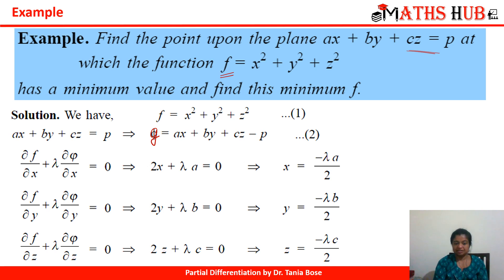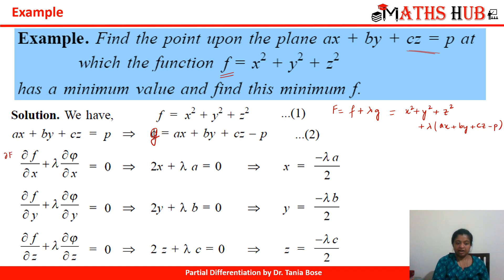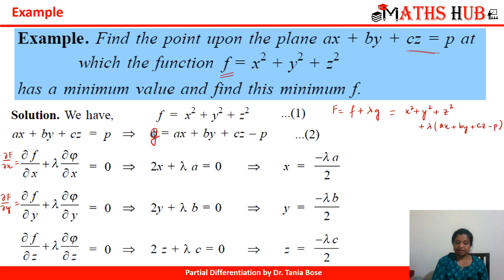Following the working rule, we construct F = f + λφ = x² + y² + z² + λ(ax + by + cz − p). Now we find ∂F/∂x = 2x + λa = 0, giving x = −λa/2. Then ∂F/∂y = 2y + λb = 0, giving y = −λb/2. Since we have three variables, we also calculate ∂F/∂z = 2z + λc = 0, giving z = −λc/2.